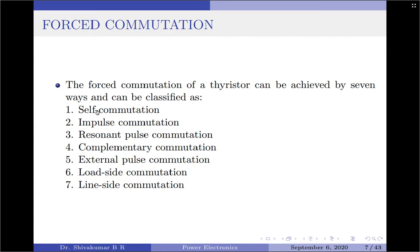The second one is impulse commutation. Impulse commutation involves a capacitor connected in parallel with the thyristor, and depending upon the circuit behavior, the capacitor voltage falls in reverse across the conducting thyristor, thereby turning it off. Since it is the voltage across the capacitor that is turning off the thyristor, impulse commutation comes under the voltage commutation technique.